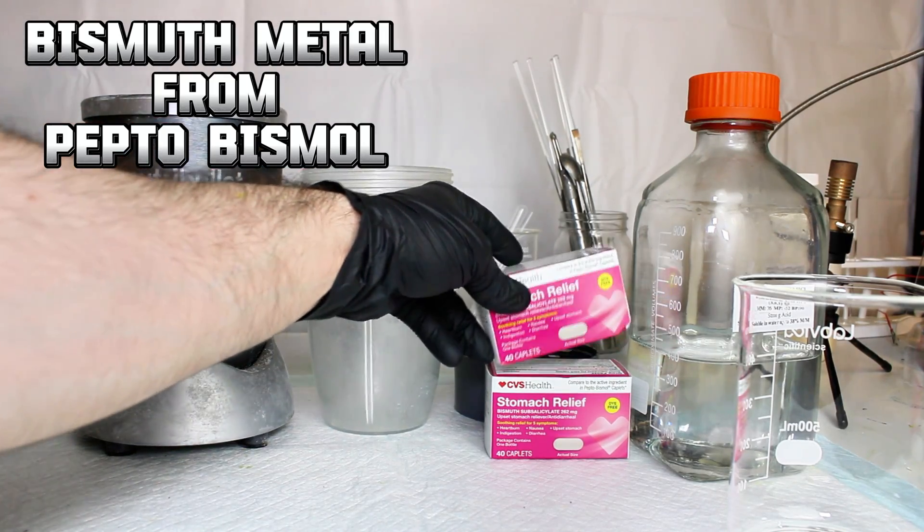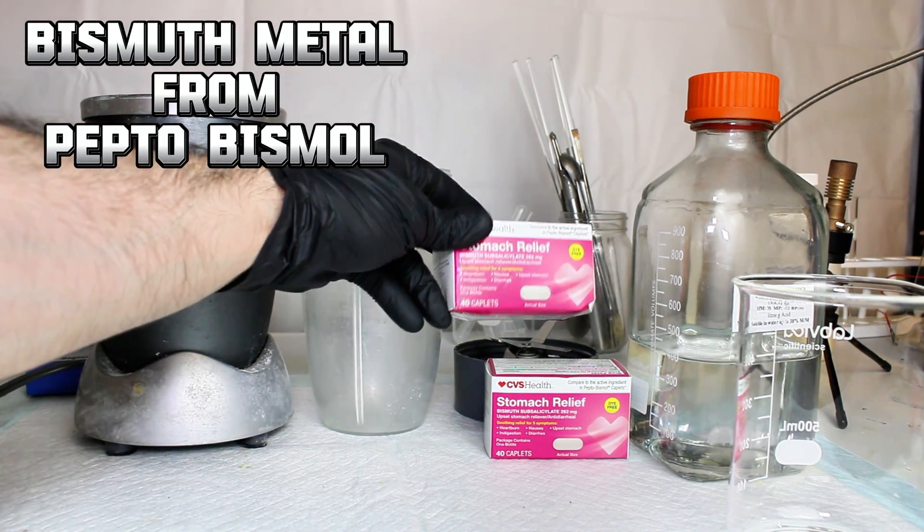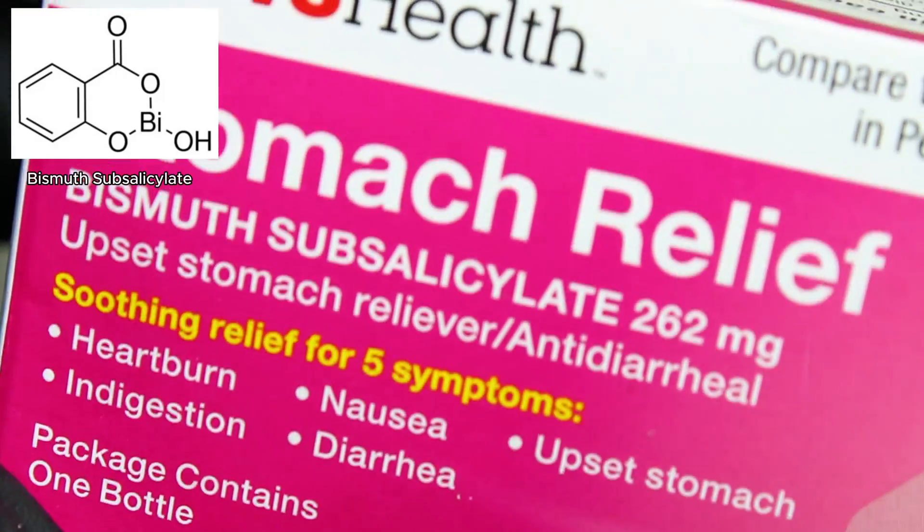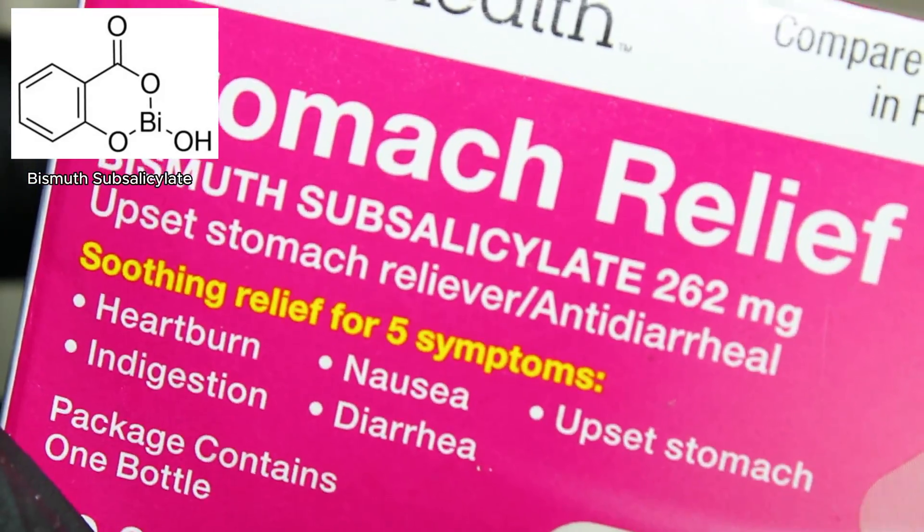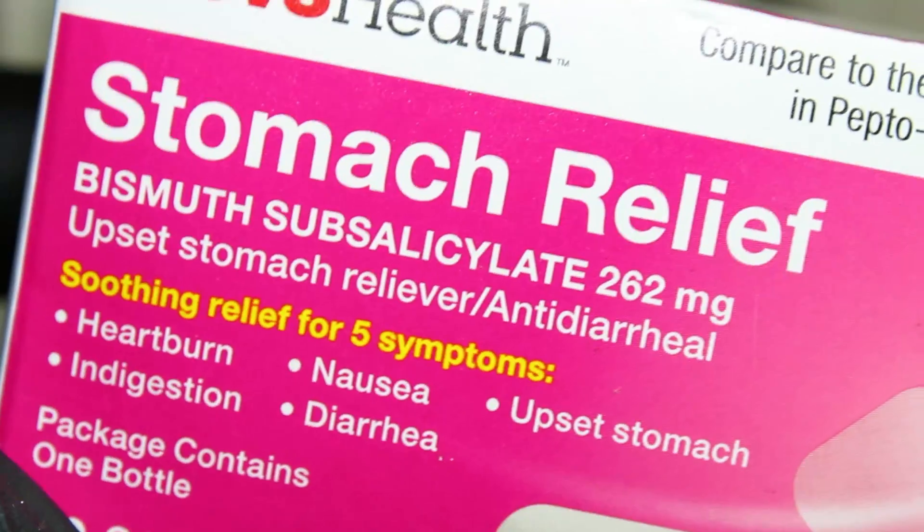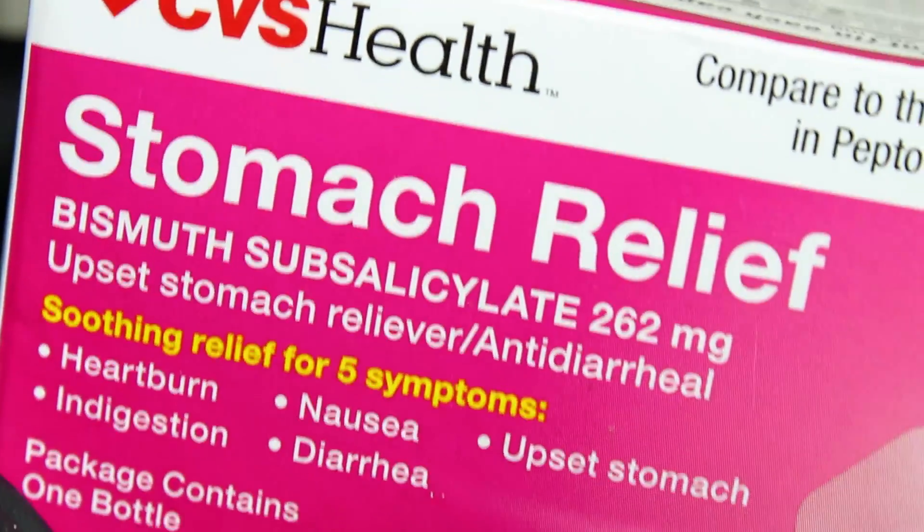Pepto-Bismol is the brand name for an antacid medication containing the chemical bismuth subsalicylate. Bismuth subsalicylate is made by the hydrolysis of bismuth salicylate, which is simply ionic bismuth bound to salicylate.